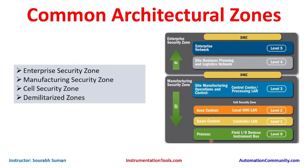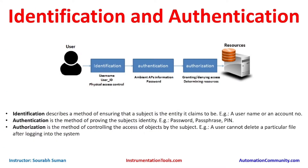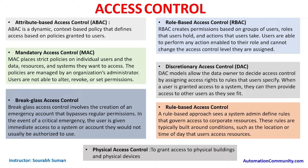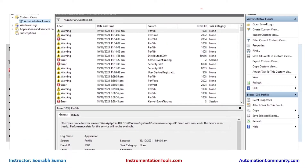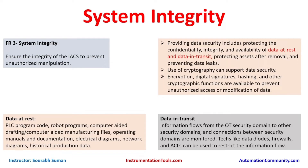We covered common OT network zones: the manufacturing zone, cell security zone, and enterprise zone for IT/business communications. Once that foundation was set, we studied the seven foundational requirements per IEC 62443. The first was identification and authentication — what identification is, what authentication is — and then types of access control and use control, including non-repudiation and time synchronization.